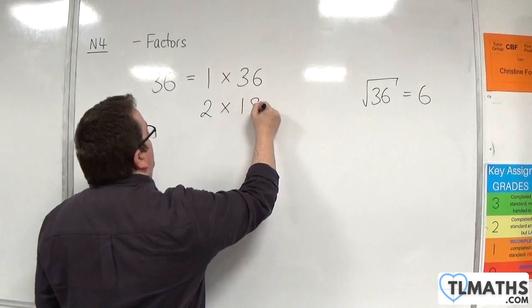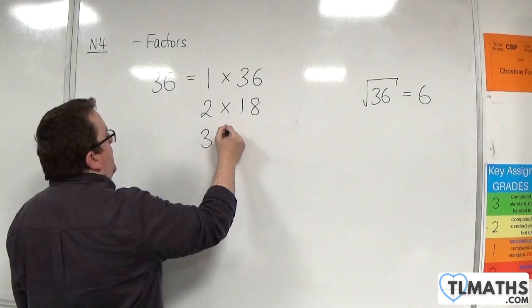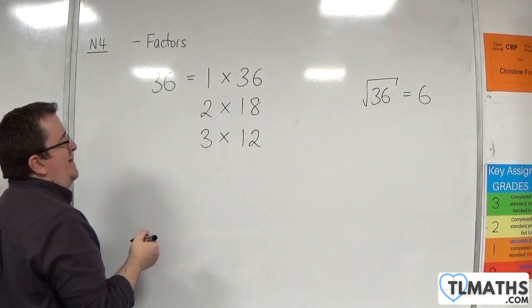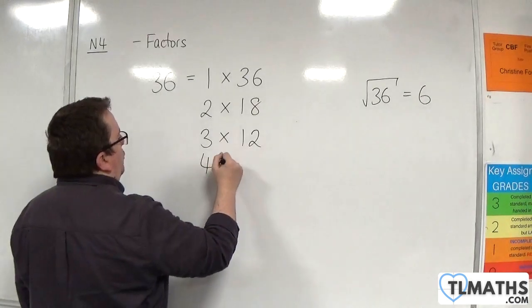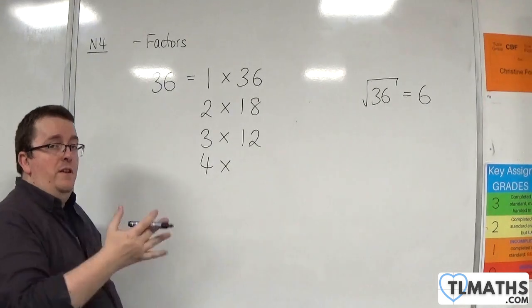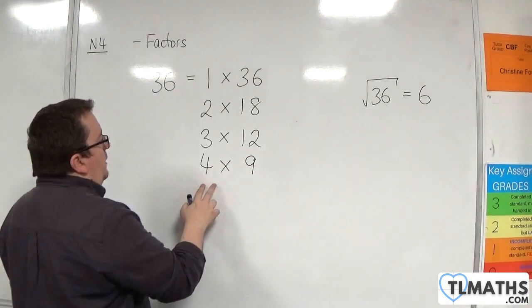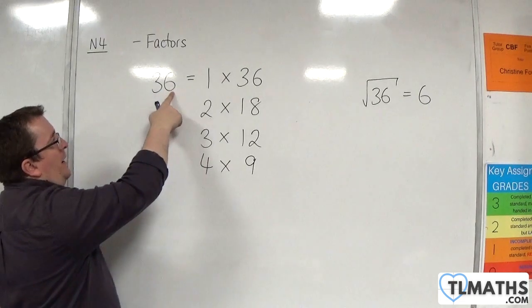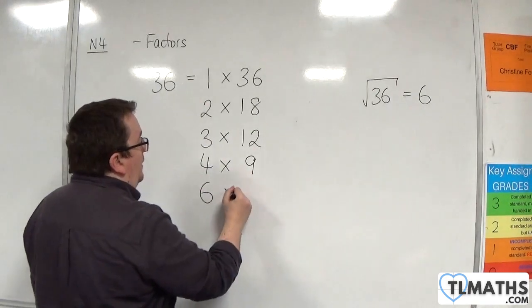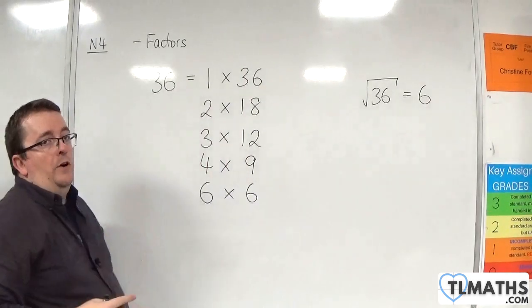Next integer up is 3. 3 times 12 is 36. What about 4? 36 divided by 2 is 18, divided by 2 is 9. So 4 nines are 36. Now 5. This end digit isn't 0 or 5, so 5 doesn't go into 36. But 6 goes into 36 6 times, as we know, because the square root of 36 is 6. And that's as far as I need to go.